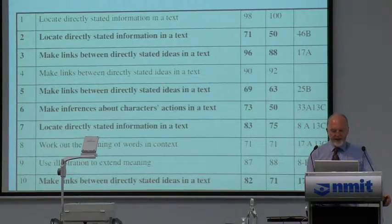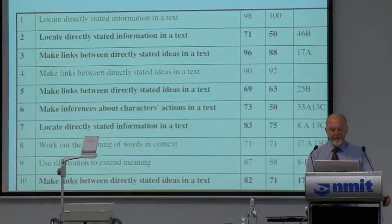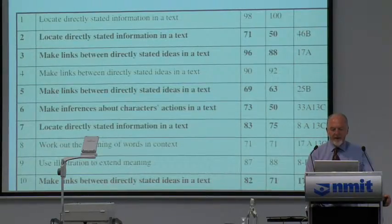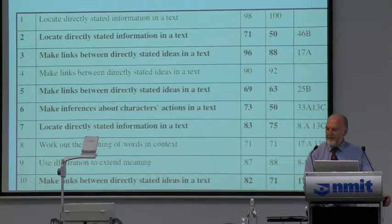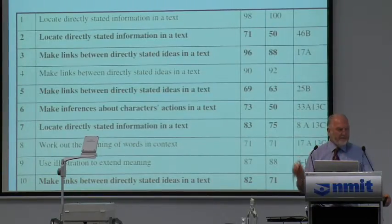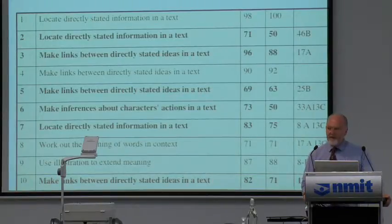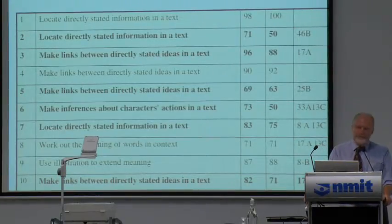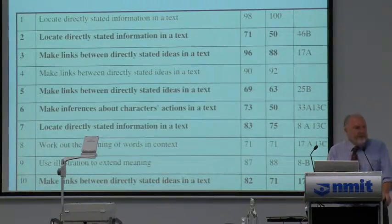When you look at item number 5, that's measuring the same thing — it's measuring how well the kids can make links between items in the text. But this time, only 69% answered correctly. There's something not holding up. If that's accurate, there's something not holding up, because if the test was doing what it should be doing, it should be doing it reliably.